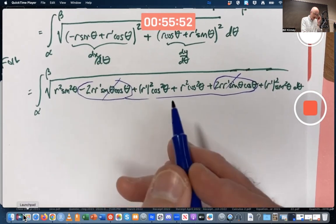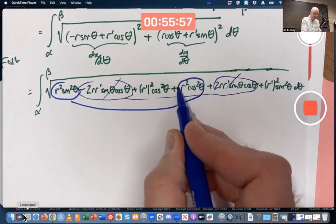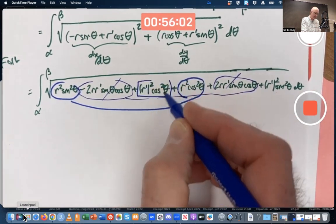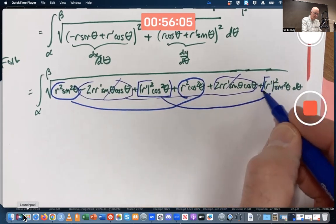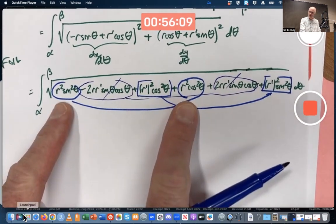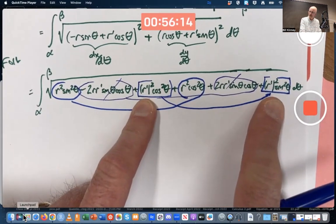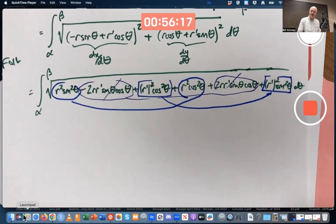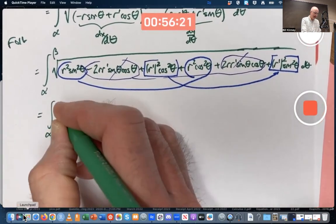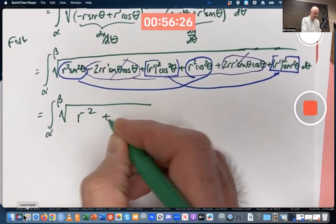Terms that involve r² are these two. They get grouped together. Terms that involve r'² are these two. They get grouped together. Factor out r² from those two terms, and factor out r'² from those two terms. Use the fact that cos² θ plus sin² θ equals one. And in the end, it simplifies very nicely to the square root of r² plus r'².